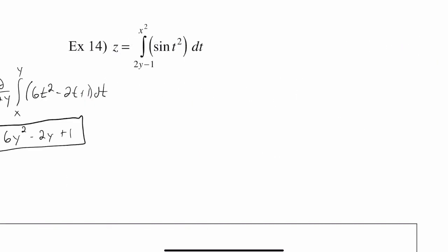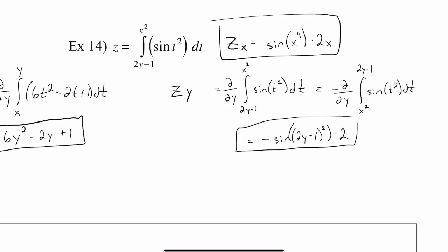Pause the video for a moment and figure out example 14. You want to find the partial derivative of z with respect to x and the partial derivative of z with respect to y. Just a hint — you're going to end up having to use the chain rule in conjunction with the second fundamental theorem of calculus to find this. Here are my answers: zx was equal to sine of x to the fourth times 2x, and zy was equal to negative sine of (2y minus 1) squared, all times 2.